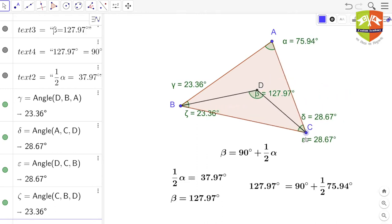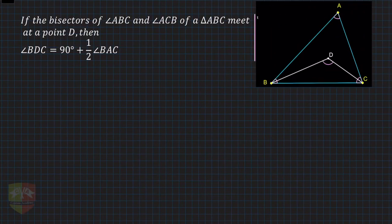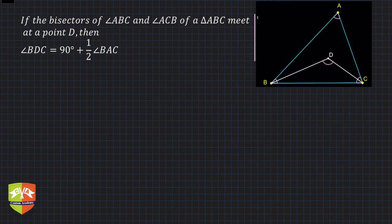At any configuration you can pause the video and verify that this relationship always holds. Now we will look at the proof of this corollary. A corollary is a statement in mathematics drawn from a particular theorem. The theorem states: if the bisectors of angles ABC and ACB of triangle ABC meet at point D, then angle BDC equals 90 degrees plus half angle BAC.